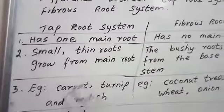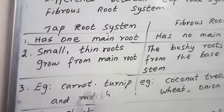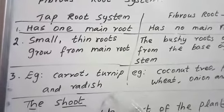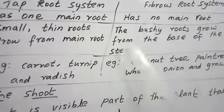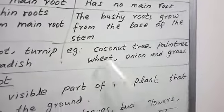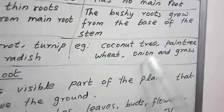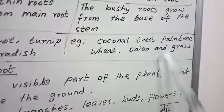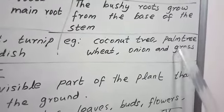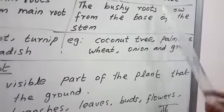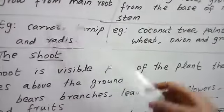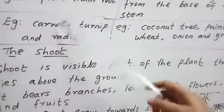The example for tap root is carrot, turnip, and radish. For the fibrous root, examples are coconut tree, palm tree, wheat, onion, and grass. If you see grass, it will be the fibrous root; if you take carrot, it will be the tap root.